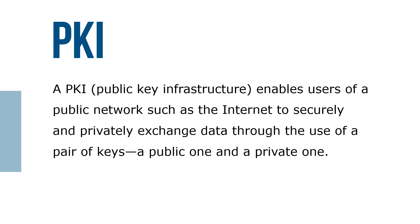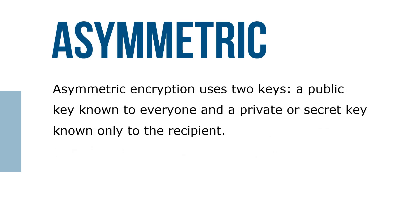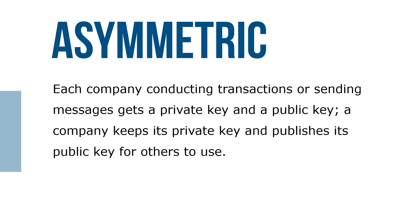A PKI, or Public Key Infrastructure, enables users of a public network such as the internet to securely and privately exchange data through the use of a pair of keys — a public one and a private one. Asymmetric encryption uses two keys: a public key known to everyone, and a private or secret key known to only one recipient. Each company gets a private key and a public key; it keeps its private key and publishes its public key for others to use.